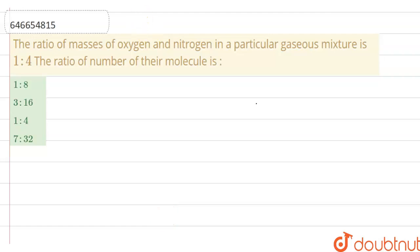Hello everyone, let's start the question. The ratio of masses of oxygen and nitrogen in a particular gaseous mixture is 1 ratio 4. The ratio of number of their molecules?